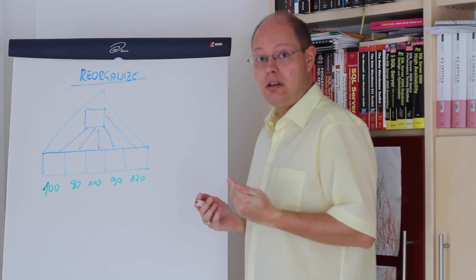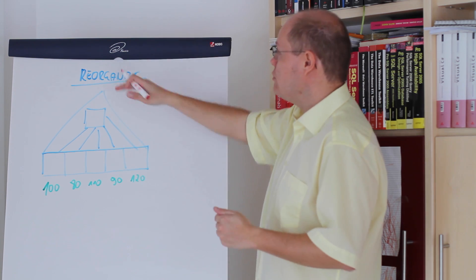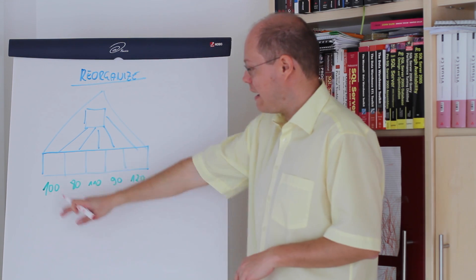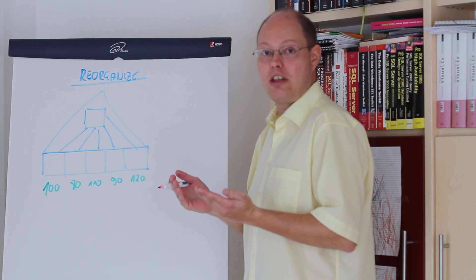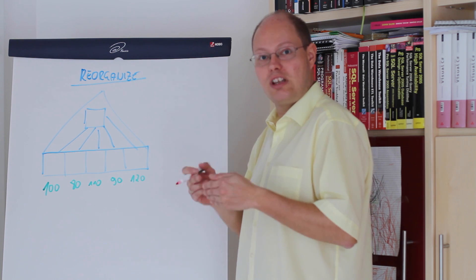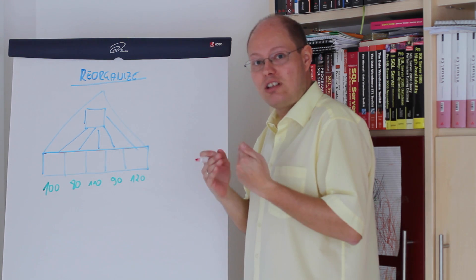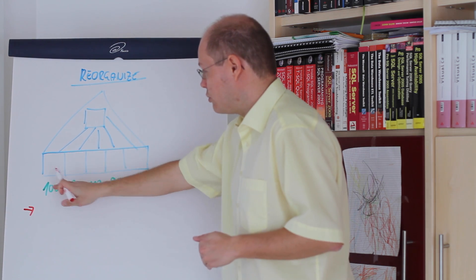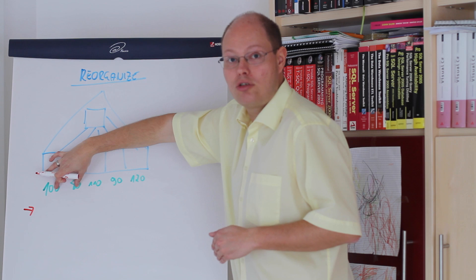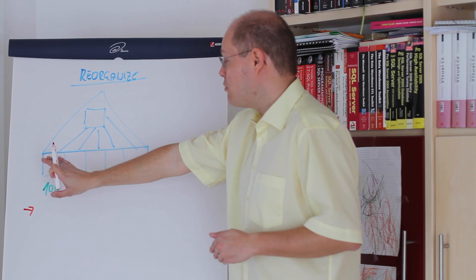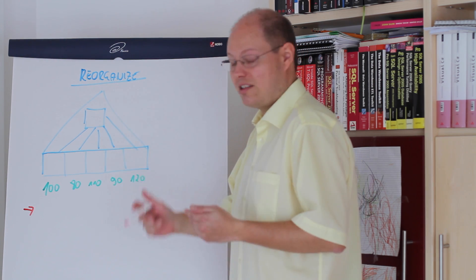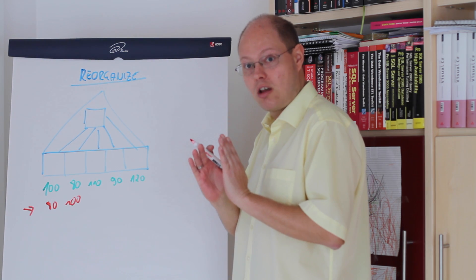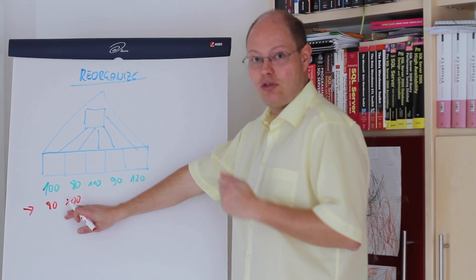In addition to index rebuild operations, SQL Server also supports so-called reorganize operations that you can apply on clustered and non-clustered indexes. An index reorganize operation works internally with multiple system transactions. SQL Server goes through the leaf level of that index with a system transaction and just swaps two pages if those pages are not in ascending order. For example, with a page ID of 100 and page ID of 80 not in ascending order, we just swap both pages — that's one system transaction. The overhead of that swap operation is one page of 8 kilobytes.